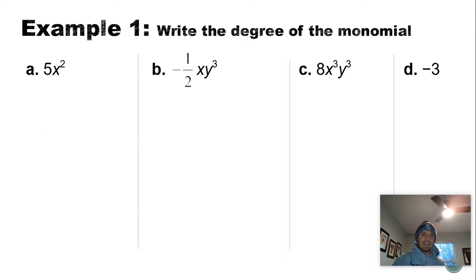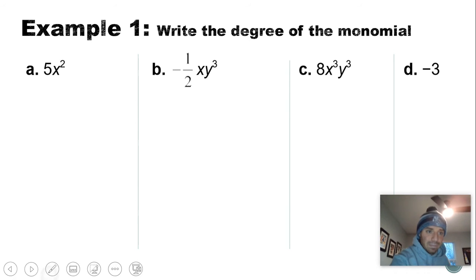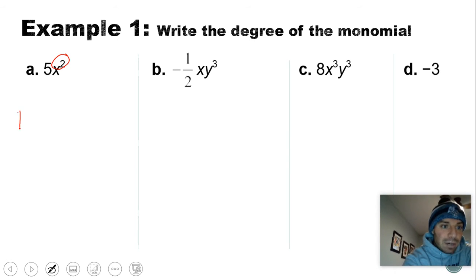If we take a look at example number one, we have four different things and we want to find the degree of the monomial. A monomial has only one term — terms are separated by operations such as plus or minus. Letter A is pretty easy. In finding the degree, we're looking at the highest exponent. There's only one variable here, the x, so my degree would be two.